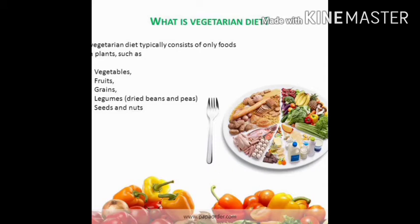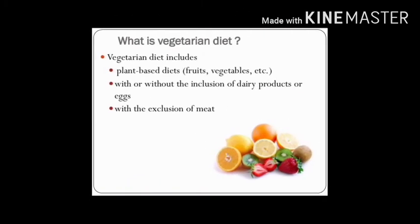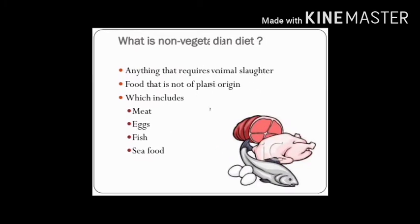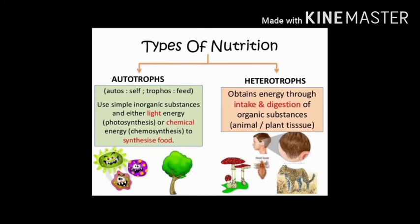Vegetarians are people who eat only plants or parts of plants. Non-vegetarians are people who eat plant as well as animal products. Vegetarian diet includes mainly fruits, vegetables, and stem, root, leaf, or flower parts of plants. Non-vegetarian diet includes meat, eggs, fish, and seafood.